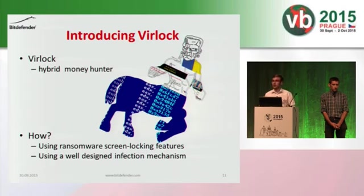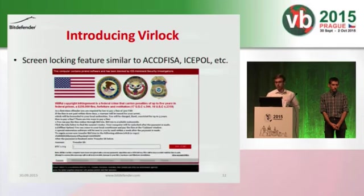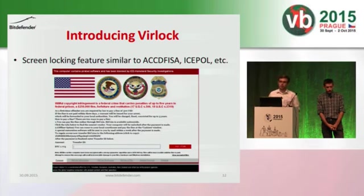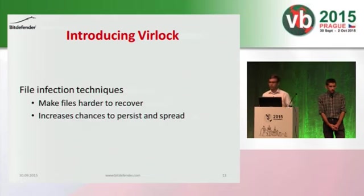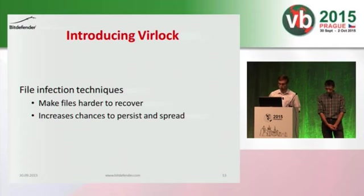Virlok is a hybrid money-hunter kind of creature. It uses ransomware's screen-locking features to get money directly from its victims, and uses a well-designed infection mechanism, as we are about to see. It looks similar to IcePol that we previously met. Because screen lockers are usually easily bypassable by offline access via live CD, in the case of Virlok this procedure leads the user into a second trap: cleverly infected files and system changes, which will be presented in more detail by my colleague Vlad.